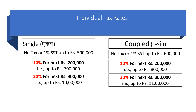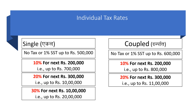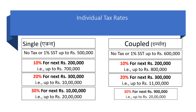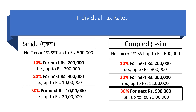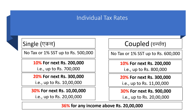The next slab is thirty percent for income up to twenty lakh. If you are single, you pay thirty percent on the portion up to ten lakh; if you are a couple, thirty percent applies on the corresponding nine lakh portion. If you are earning above twenty lakh, you have to pay thirty-six percent.